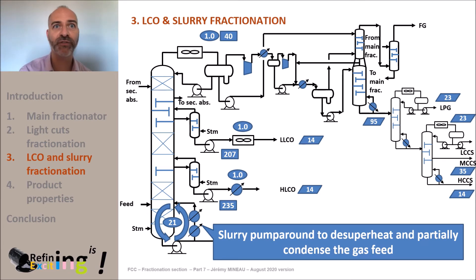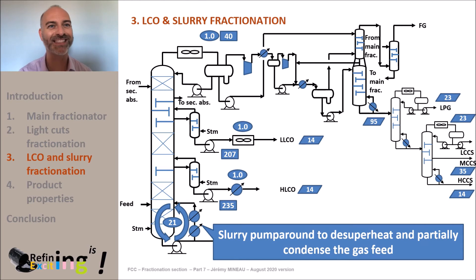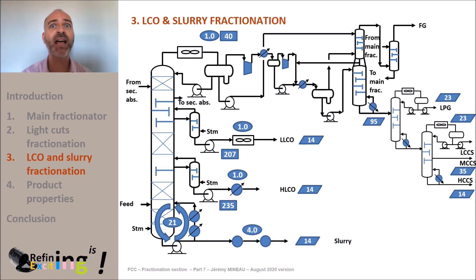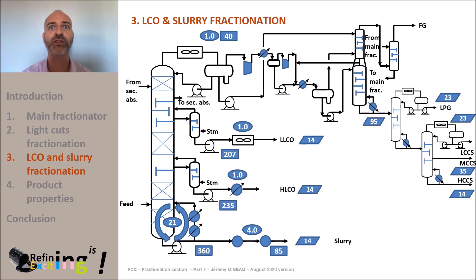We preheat the feed and produce steam, and sometimes we even use these calories elsewhere in the process. Finally, the slurry is cooled down from the main fractionation bottom's temperature of 360 degrees C down to the final storage temperature, which is about 85 degrees C. We often inject stripping steam at the tower bottoms to get a slurry cut with a reasonable flash point compatible with the storage temperature.